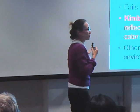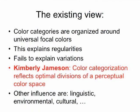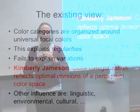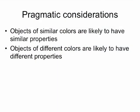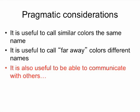My colleague Kimberly Jameson came up with a different idea: color categorization reflects some optimal divisions of a perceptual color space. It's up to an applied mathematician to understand what this optimization problem is and to give it rigor. In this talk I'll set up an optimization problem and show how this can lead to something reasonable. We'll concentrate on pragmatic considerations, ignoring linguistic, environmental, and cultural influences. The simple idea is: objects of similar colors are likely to have similar properties, and objects of different colors are likely to have different properties.